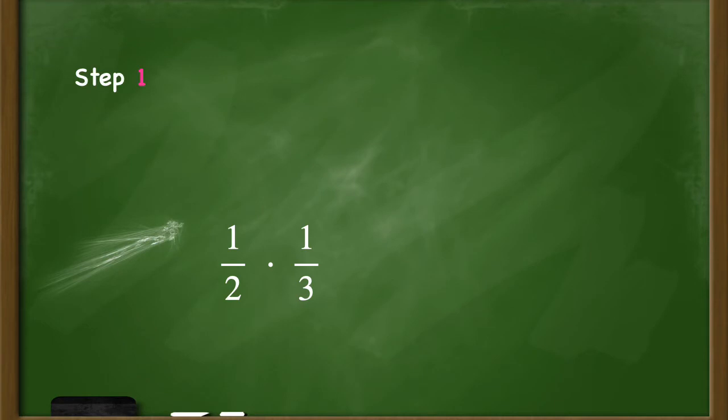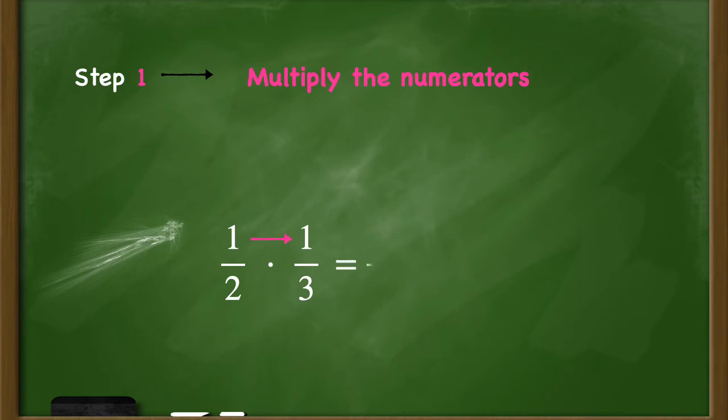When you're trying to multiply a pair of fractions, there are three easy steps to follow. I'm going to start with an example of one-half times one-third and show you all three steps. Step one is you're going to multiply the numerators straight across. My numerators are one times one, and one times one is equal to one.